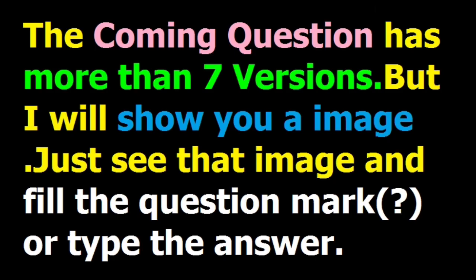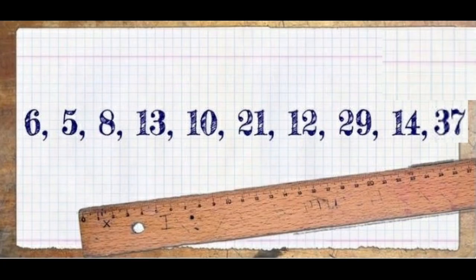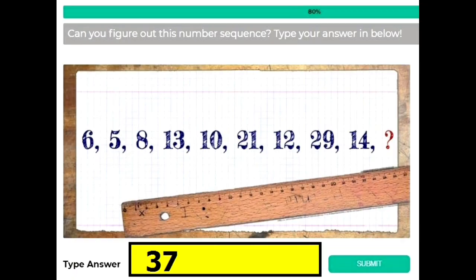The coming question has more than 7 versions or types. I will show you an image that will show you everything. Just replace the question mark with the number shown in the image. See this image and remember every number and their positions. For instance, in version 1 of this quiz you can see instead of 37 there is a question mark, so I have written the answer as 37.